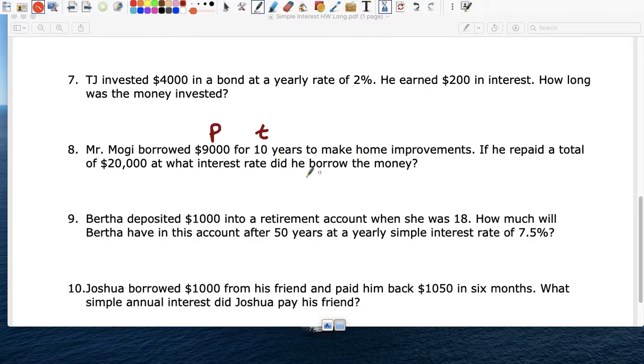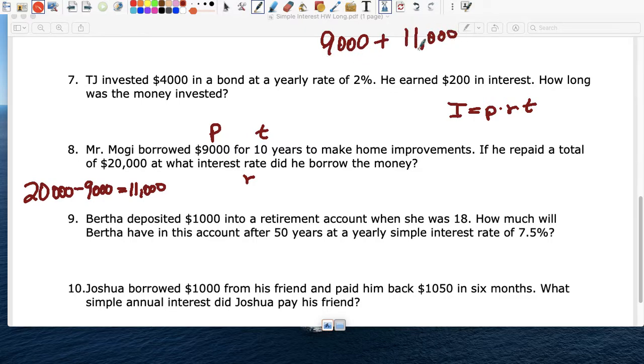So what interest rate did he borrow the money with? So R is what's missing. So I equals P times R times T. So remember, he borrowed $9,000. He paid back $20,000. So $20,000 minus $9,000 is $11,000. So think about this. He asked for $9,000. So he had to pay $9,000 back plus $11,000 extra. This is your interest. He borrowed $9,000, but paid $20,000. So he had to pay a lot of interest. Someone charged him a lot.